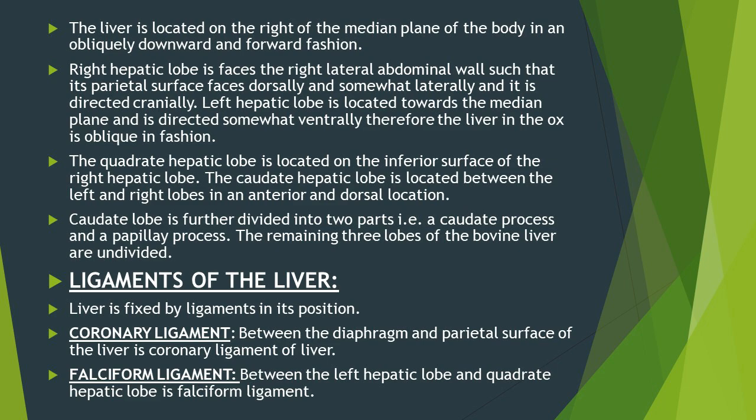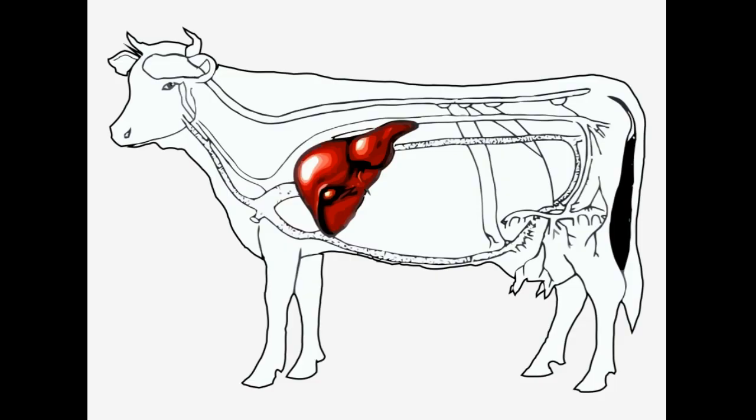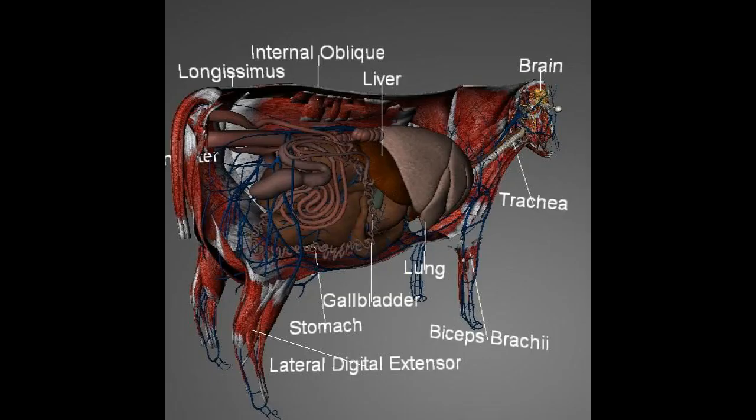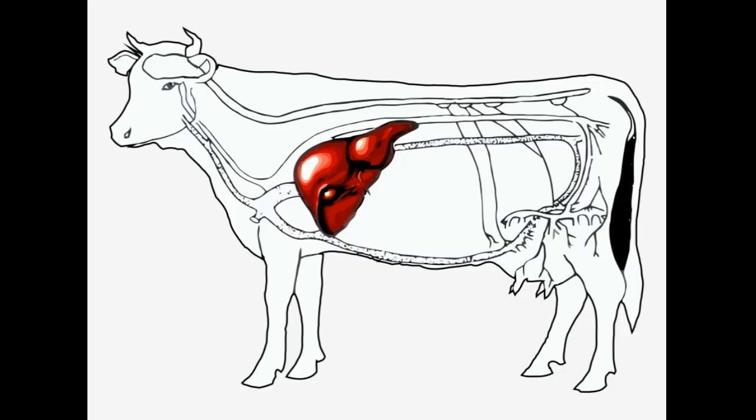Now let's discuss the lobes in bovine's liver. In the ox, the liver is located on the right side of the median plane in an obliquely downward and forward fashion. The right hepatic lobe faces the right lateral abdominal wall such that its parietal surface faces dorsally and somewhat laterally, directed cranially.